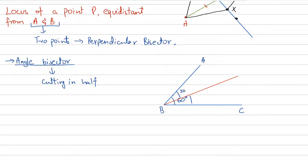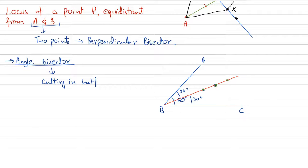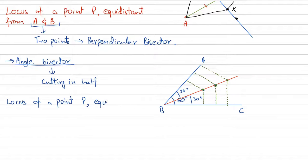Suppose we have angle ABC of 60 degrees. The angle bisector divides it into two 30-degree angles. Any point lying on the angle bisector is equidistant — in terms of perpendicular distance — from both lines AB and BC.